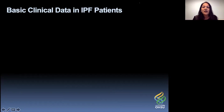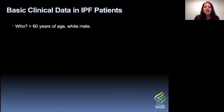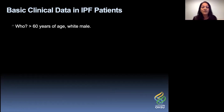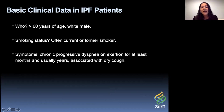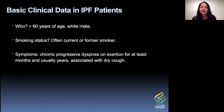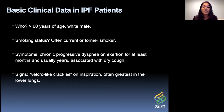Let's talk about basic clinical data in patients with IPF. When you pull up your CT scan, you'll look at the clinical history — knowing the typical clinical background can affect your pre-test probability. Typically these patients are over the age of 60 and are white males, often current or former smokers. Their symptoms include chronic progressive dyspnea on exertion for at least months but usually years, associated with a dry cough — typically dyspnea for approximately three to five years that's been gradually getting worse. On physical exam, the clinician will describe crackles on inspiration, greatest in the lower lungs, that usually sound like Velcro.